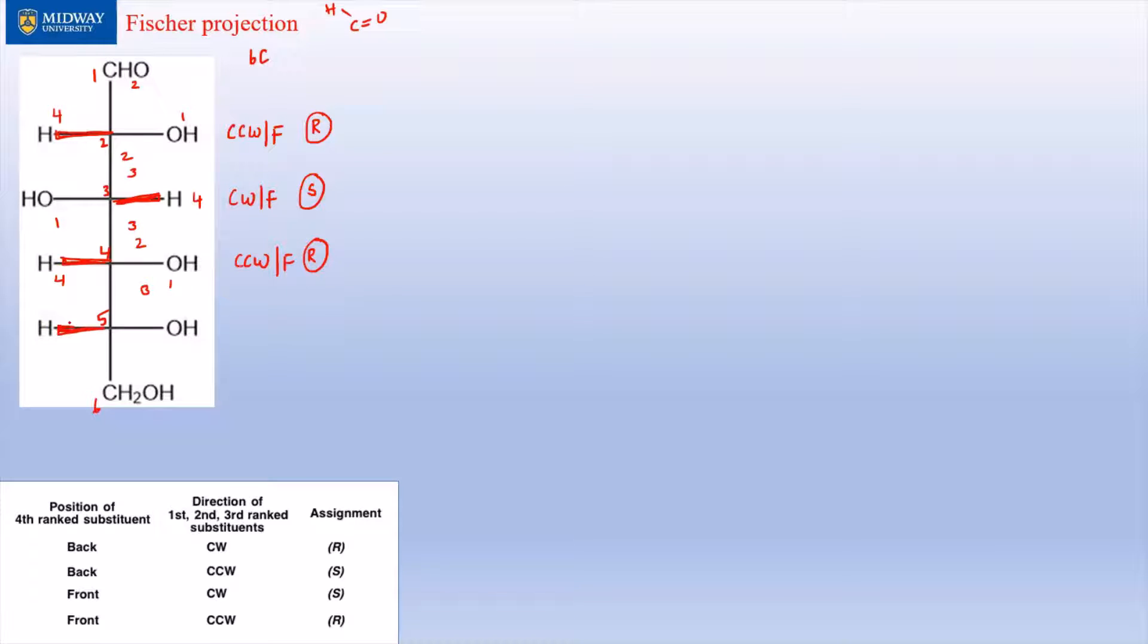I'm going to go through this really quick, so that's four, that's one, that's two, that's three. So again counterclockwise and front that would be R as well. Okay good, that means we have two, three, four, five corresponds to RSRR - that's what we want.